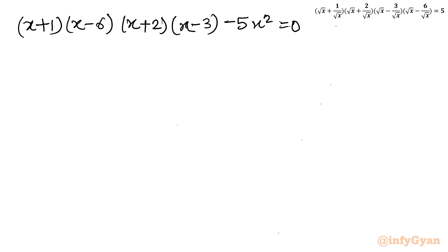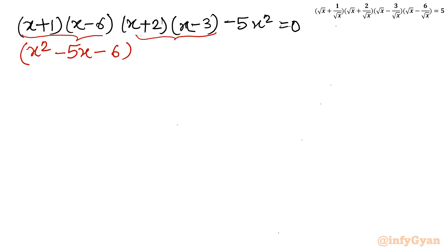Now I will take the products. The first two brackets give x² - 5x - 6. The second two brackets give x² - x - 6. Combining with minus 5x², we write: (x² - 5x - 6)(x² - x - 6) - 5x² = 0. I split -5x as -3x - 2x, and -x as -3x + 2x, to prepare for the next step.